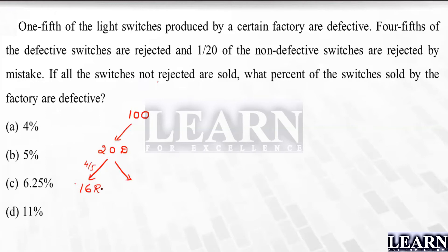Non-defective switches is 80. Out of these, one by twenty of the non-defective switches are rejected by mistake — one by twenty of 80 is 4. So 4 non-defective switches are rejected by mistake.